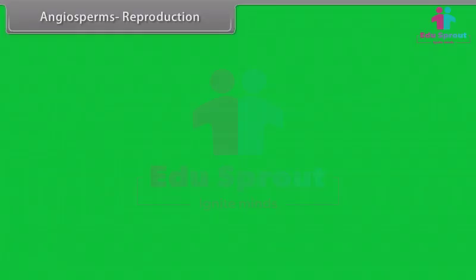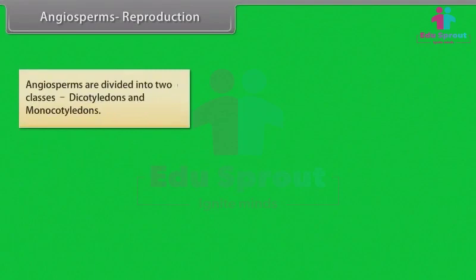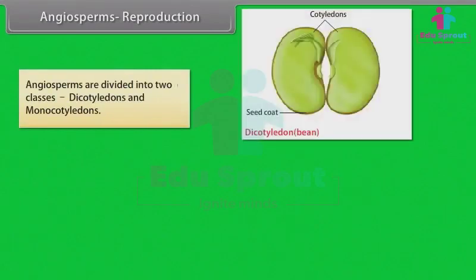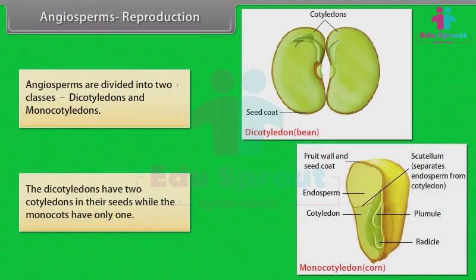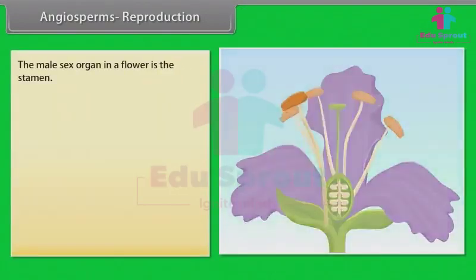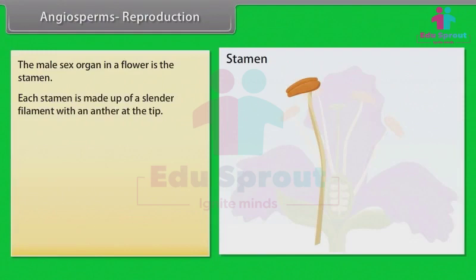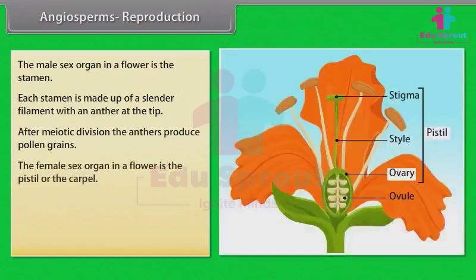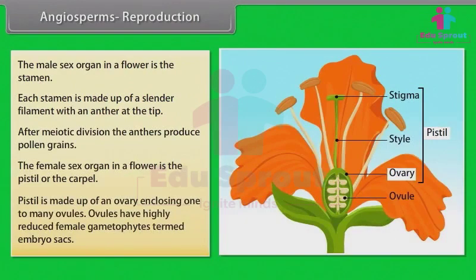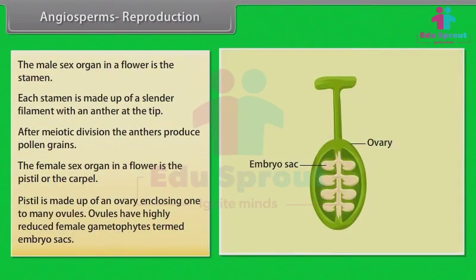Angiosperms are divided into two classes: Dicotyledons and Monocotyledons. The dicotyledons have two cotyledons in their seeds, while the monocots have only one. The male sex organ in a flower is the stamen. Each stamen is made up of a slender filament with an anther at the tip. After meiotic division, the anthers produce pollen grains. The female sex organ in a flower is the pistil or the carpel. The pistil is made up of an ovary enclosing one to many ovules. Ovules have highly reduced female gametophytes termed embryo sacks.